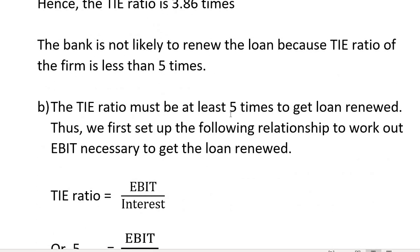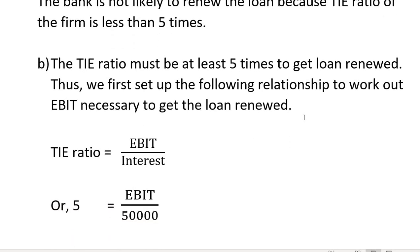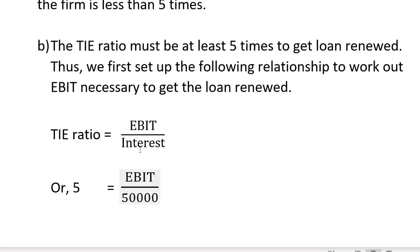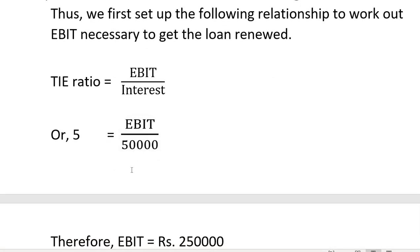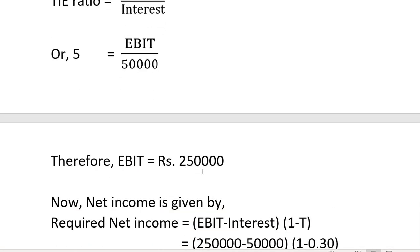The TIE ratio must be at least 5 times to get the loan renewed. Thus, we first set up the following relationship to find the EBIT necessary to get the loan renewed. The TIE ratio must be at least 5 times, where TIE equals EBIT divided by interest, so 5 times interest equals the required EBIT.